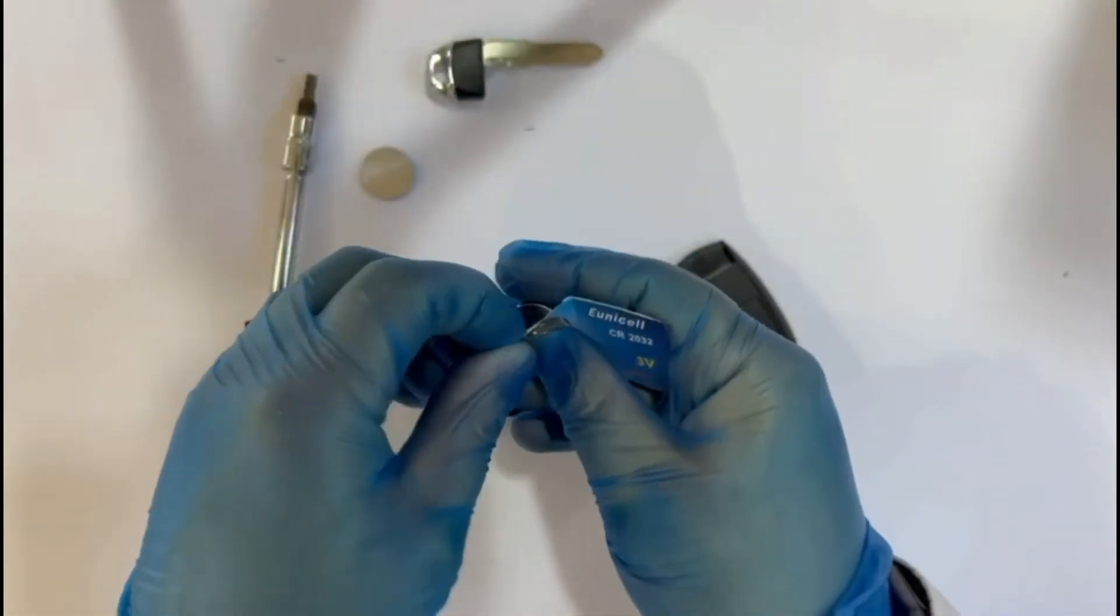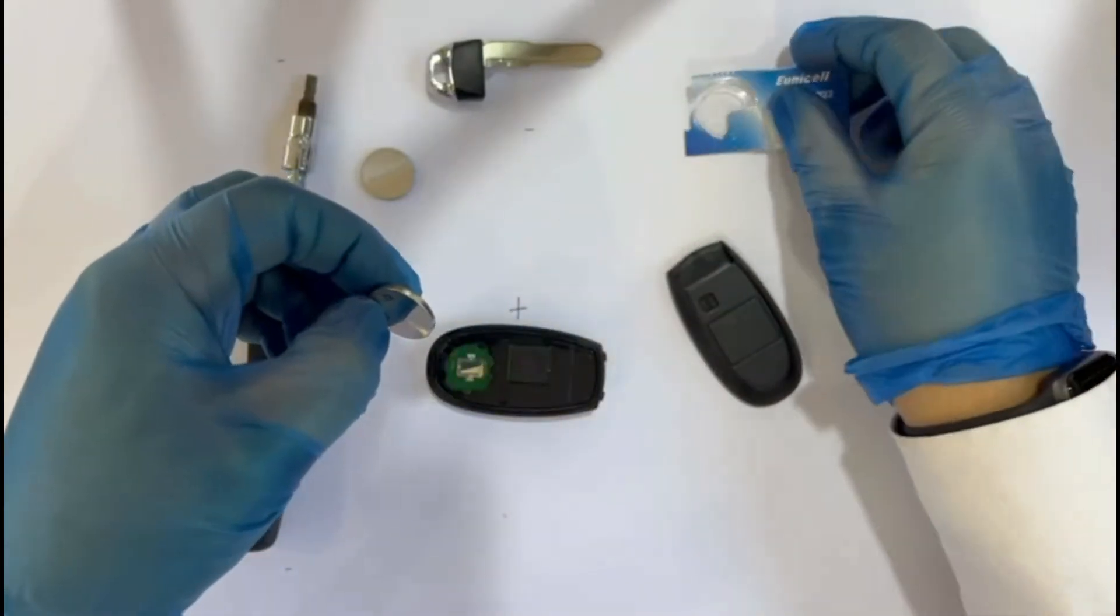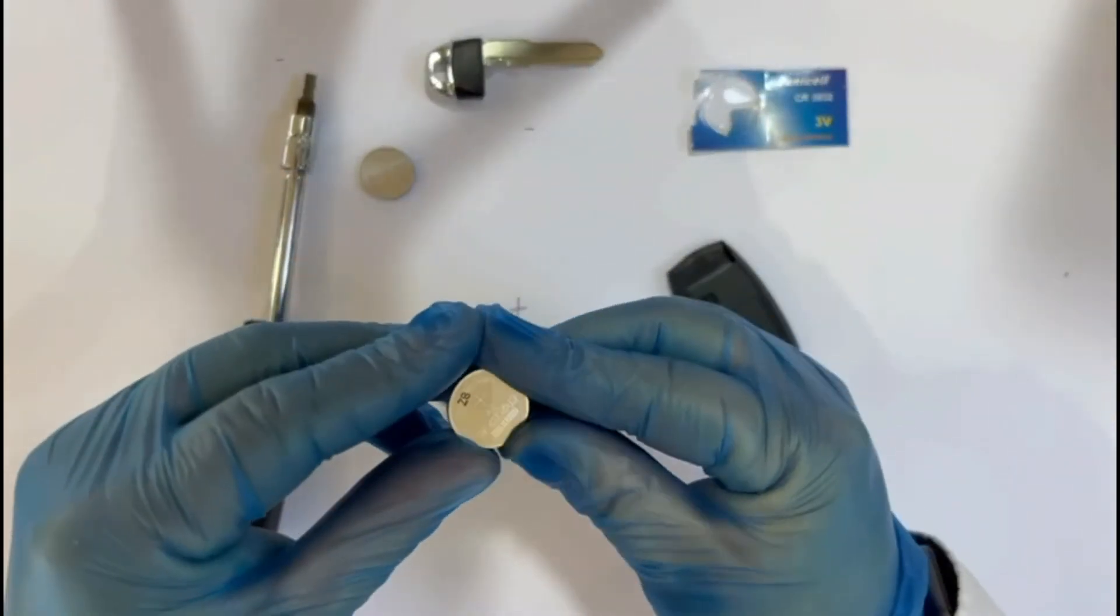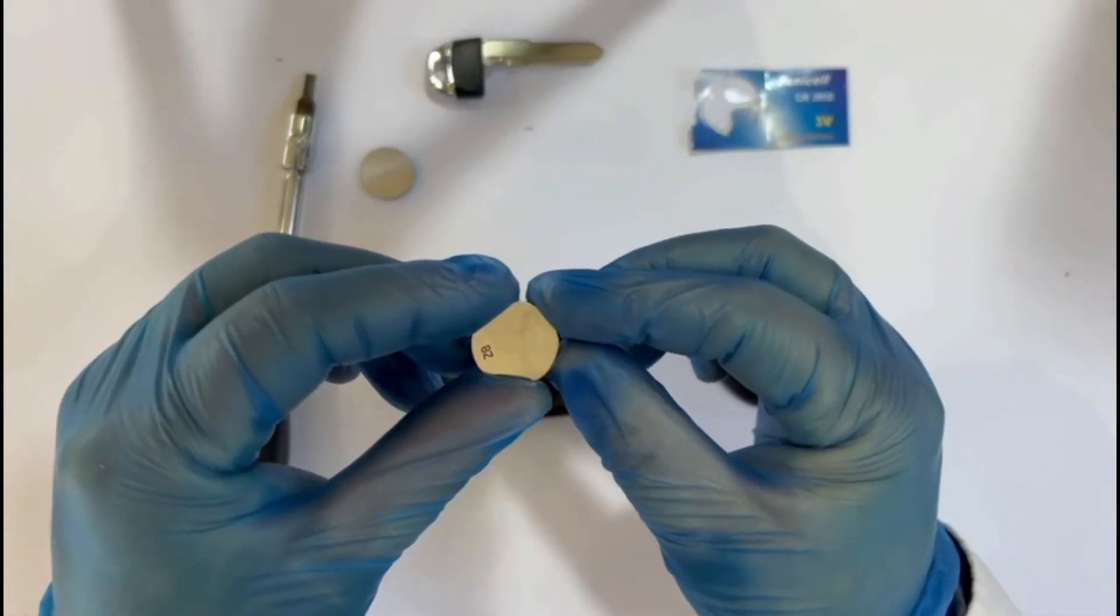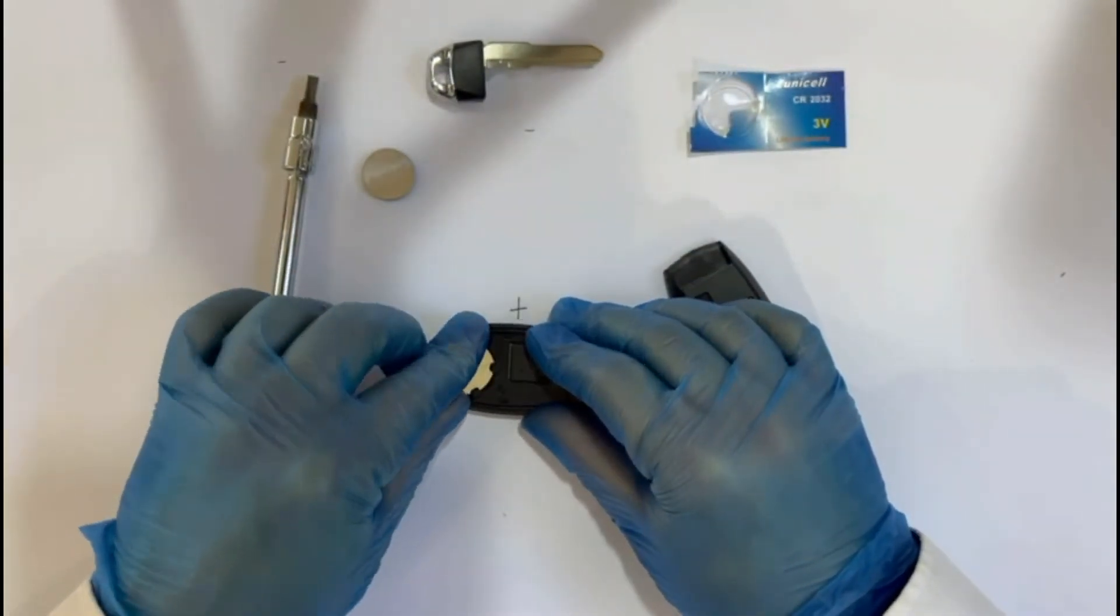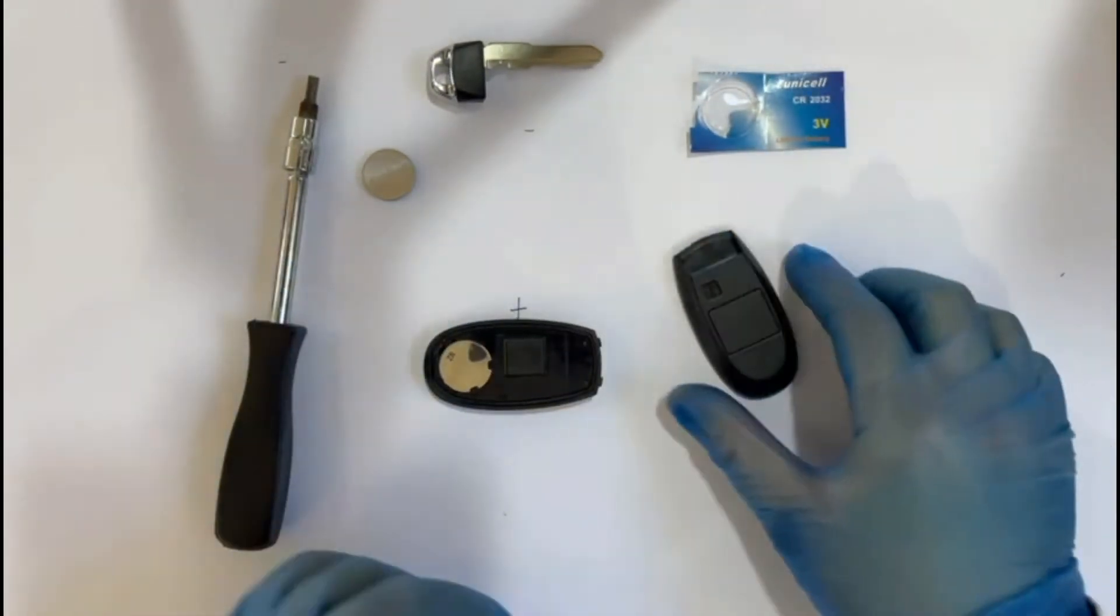When removed from the casing, just remember when taking it out, try not to touch the top or the bottom of the battery as this will shorten the life of it. So grab it by the sides and place it into the fob until it clicks into place.